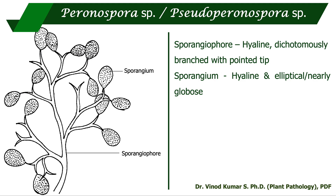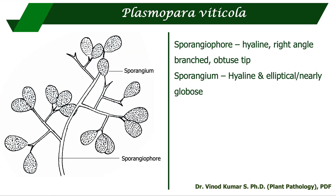Peronospora parasitica causes downy mildew of onion, Peronospora manchurica causes downy mildew of soybean, and Pseudoperonospora cubensis causes downy mildew of cucurbits. All share the same morphological characteristics: the sporangiophore is hyaline, dichotomously branched, with a pointed tip, and the sporangium is hyaline, elliptical, and nearly globose. Plasmopara viticola causes downy mildew of grapevine; here the sporangiophore is hyaline, right-angle branched, with an obtuse or blunt tip, and the sporangium is hyaline, elliptical, and nearly globose.